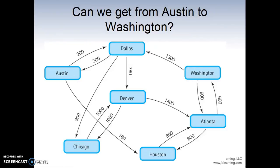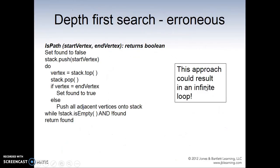So that is our application in assignment four. Now let's look at how we construct this — this application from Austin to Washington — and how we construct that using the two approaches. First, what is depth-first search?